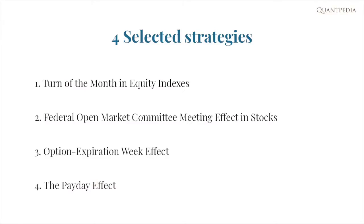The four strategies we picked are: Turn of the Month in equity indexes, Federal Open Market Committee meeting effect in stocks, Option Expiration Week effect, and the Payday effect.